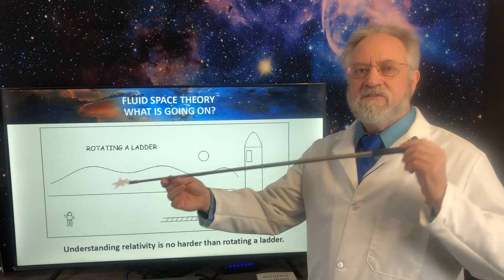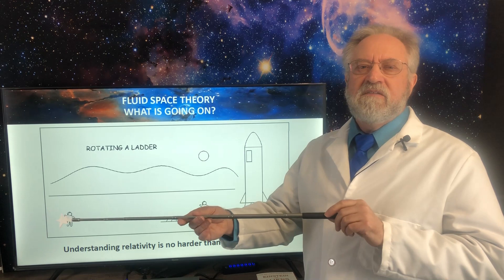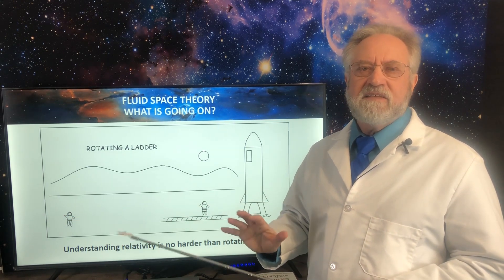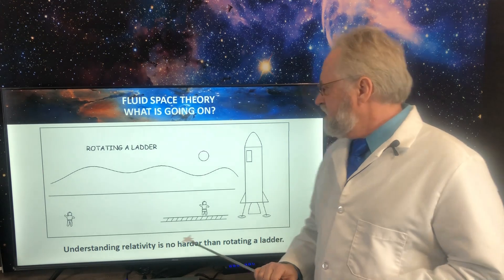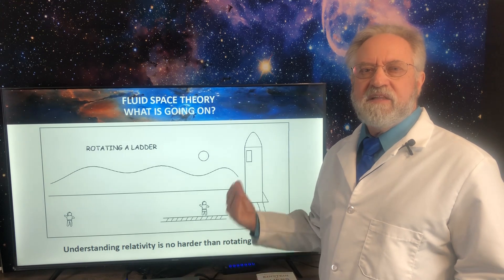Just like when something goes fast, it's exchanging length in the direction of motion for length in the tc dimension. It's the exact same thing that's happening. So relativity is no harder to understand than standing up a ladder.